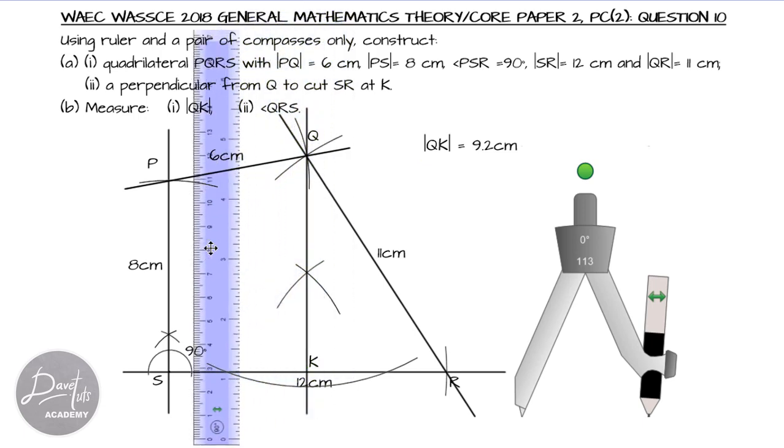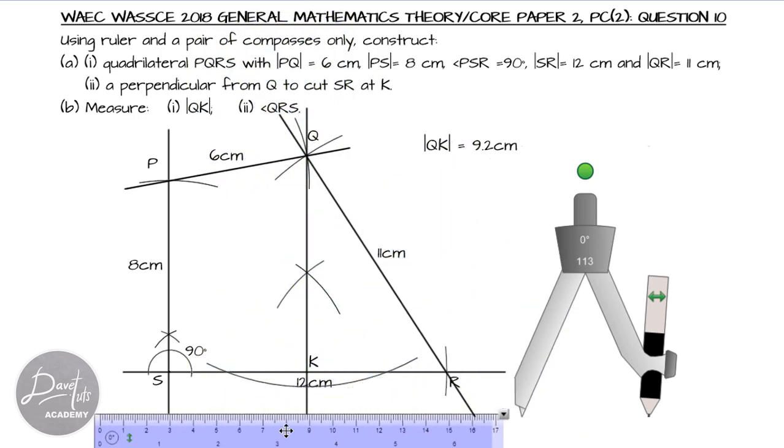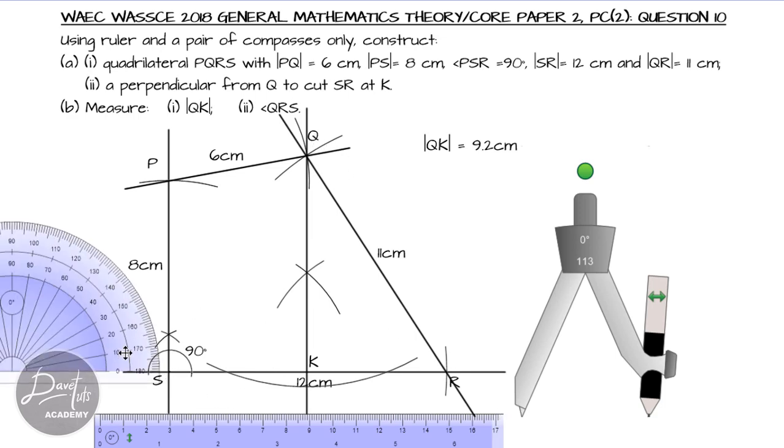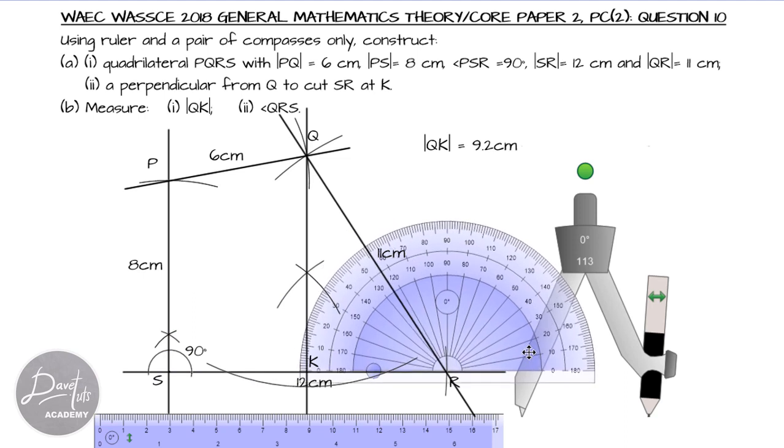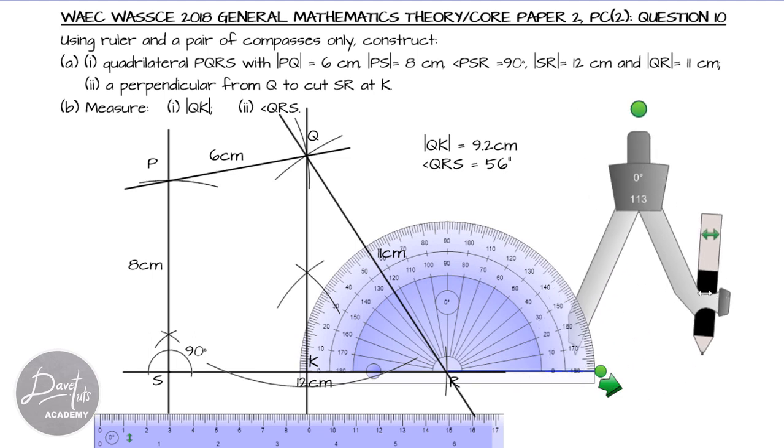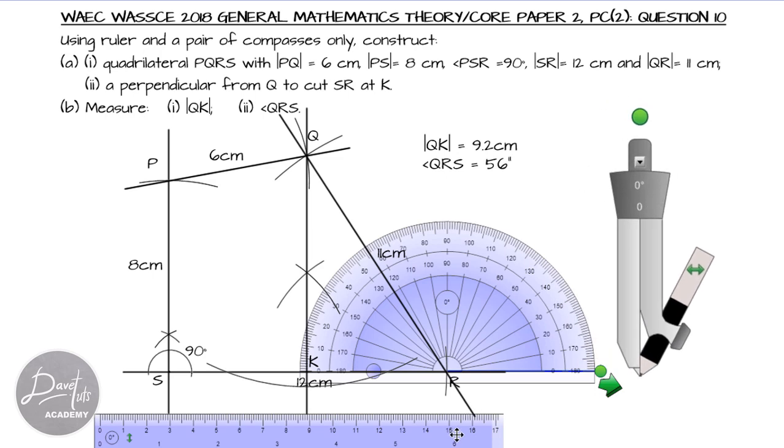So, noting our QK, we can bring in our protractor. Our protractor will be used to measure angle QRS. So, R is the middle, is the midpoint. If we put the origin of the protractor there, we can see from SR to Q, we are having the angle QRS to be 56 degrees. 56 degrees. And, interestingly, just like that, within the space of some 10, 11 minutes, our question on construction is quite done.